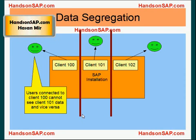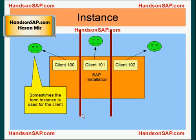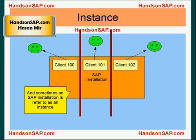Sometimes the term 'instance' is also used for the client. For example, I can say: which instance are you connected to — client 100 or client 101? And sometimes the term 'instance' is used for the box itself. For example, can I have access for the development instance? So the term 'instance' can be used for both the client as well as for the environment — the context would tell you what exactly the instance means.